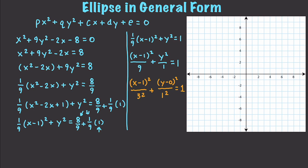From the standard form we know h and k equal 1 and 0, a equals 3, and b equals 1. We can now plot all of our key points — the center at (1, 0), then points 3 units to the left and right, and 1 unit up and down — and draw our ellipse connecting them.